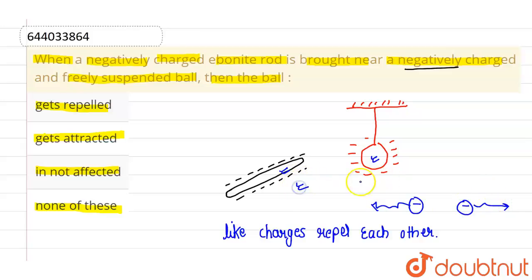if this ebonite rod is held tightly or firmly, then this will repel this particular ball. The final position of the ball will be somehow like this - it will be repelled in this particular direction. So the correct option is gets repelled.